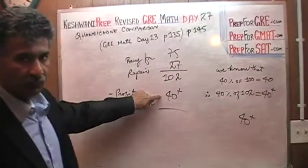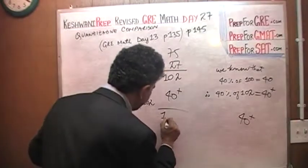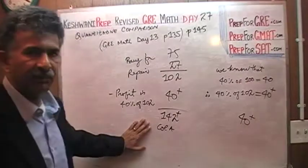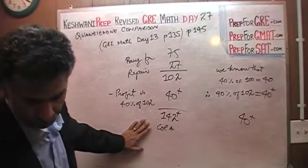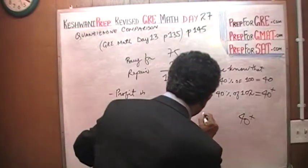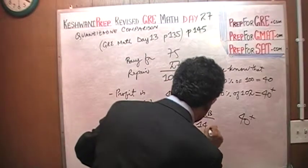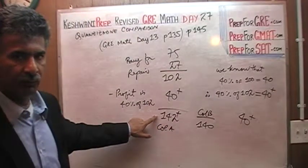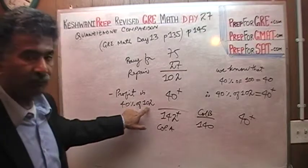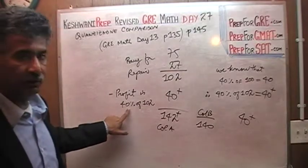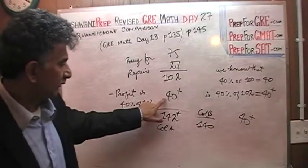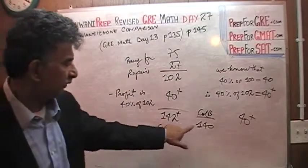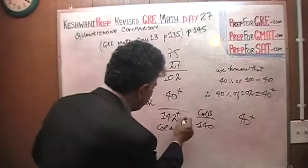Therefore, something more than 40 plus 102 is going to be something more than 142. That's our Column A — whatever it is, it is something more than 142. In Column B, we have 140. Since Column A is more than 142 and Column B is 140, the answer is A.